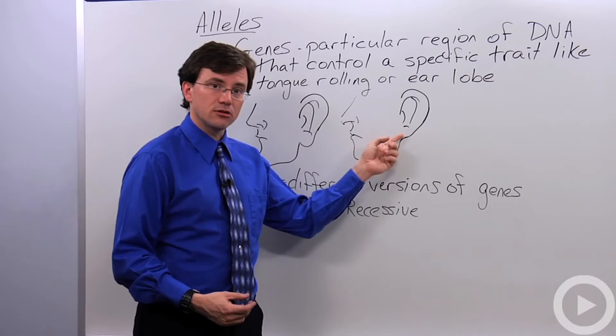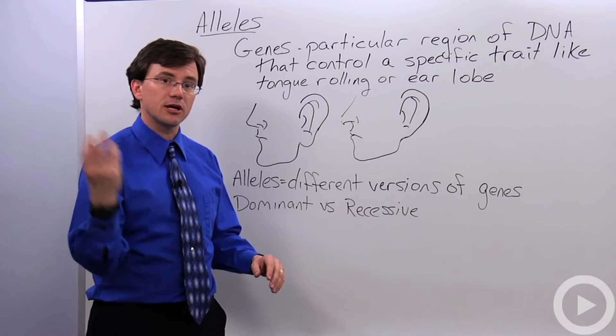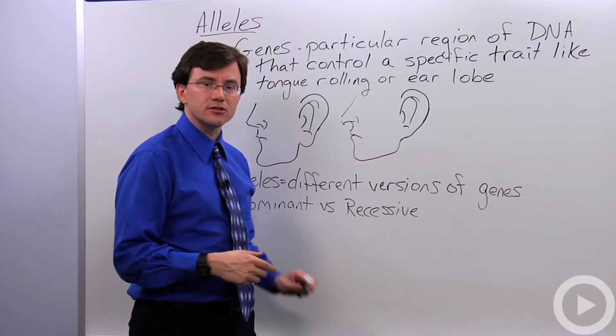Whereas the attached earlobe shape, that allele is recessive, which means you don't see its effects unless it's paired up with an identical attached earlobe allele.